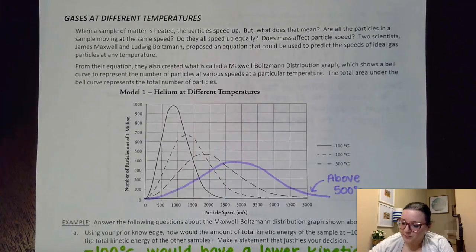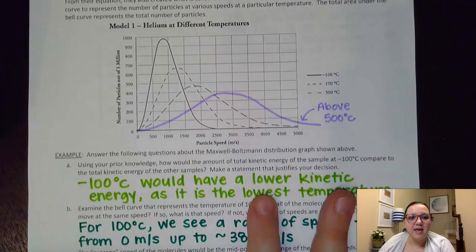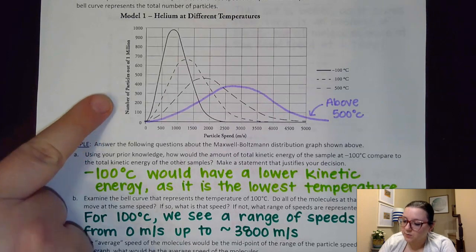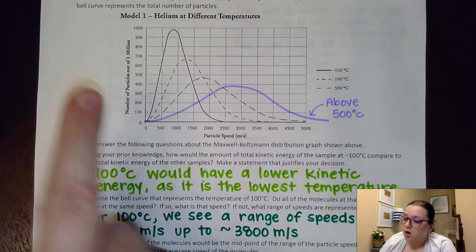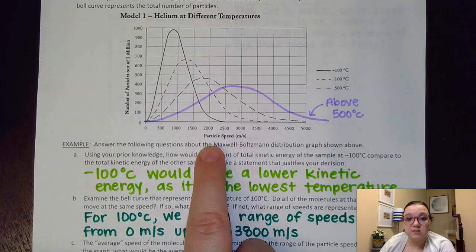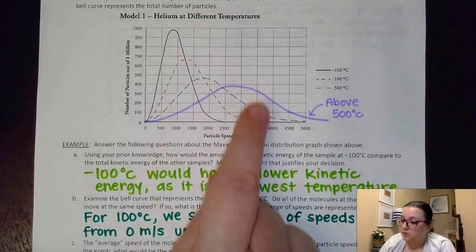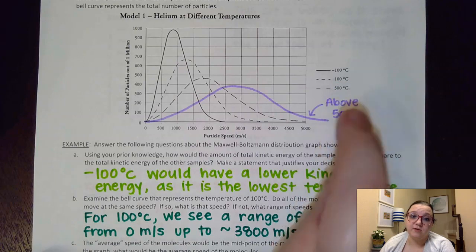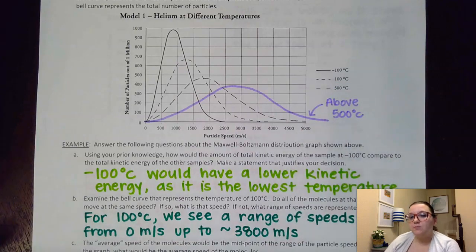And so to get us started here on model one they gave us a graph where they showed helium at different temperatures. You notice on the side here we had number of particles. Down here we had particle speed and our three different curves were at negative 100 positive 100 and positive 500 degrees Celsius. Now something I want to point out about these curves.